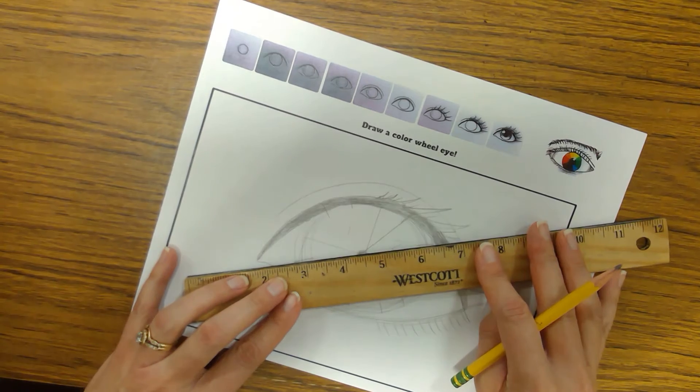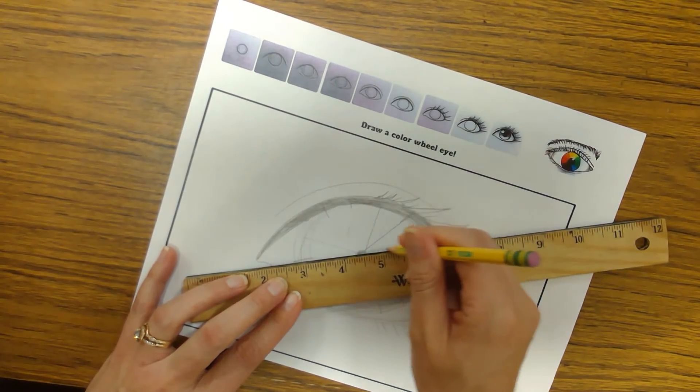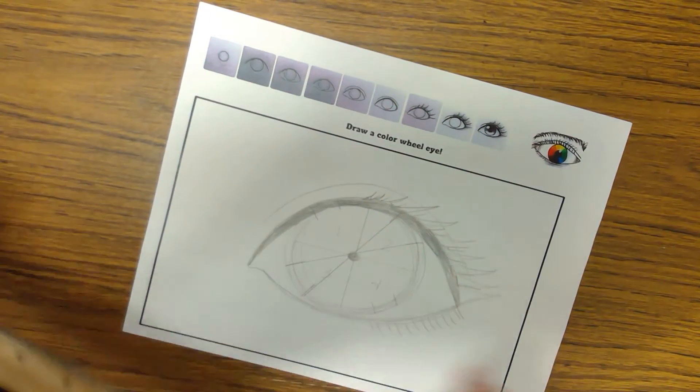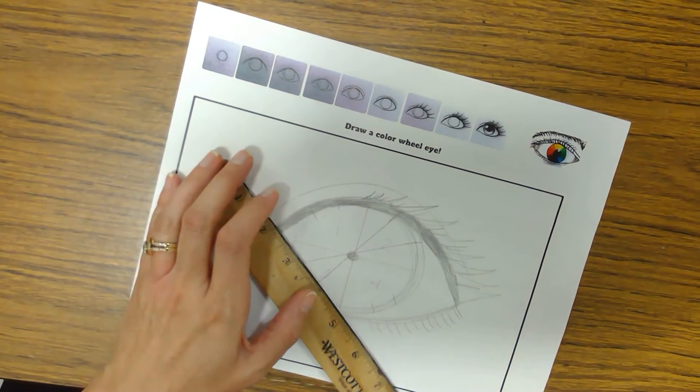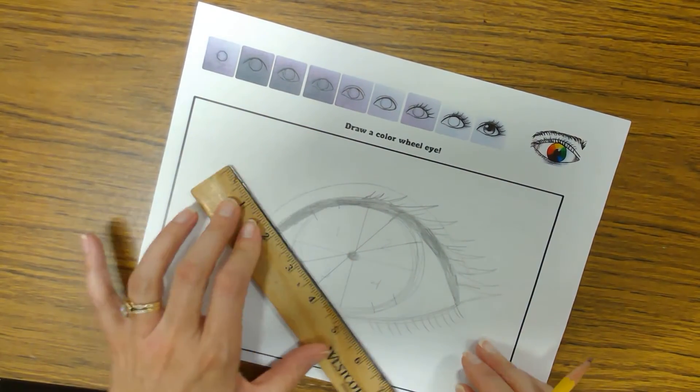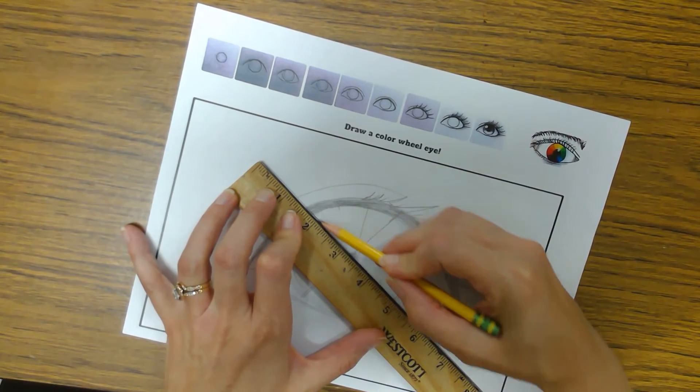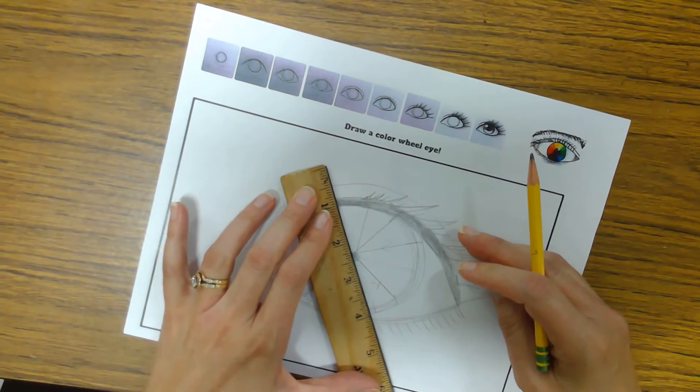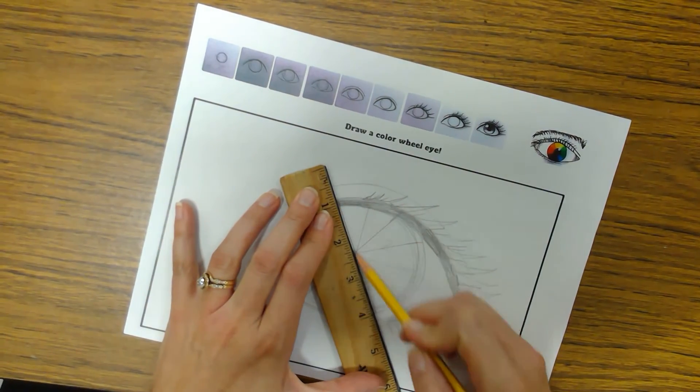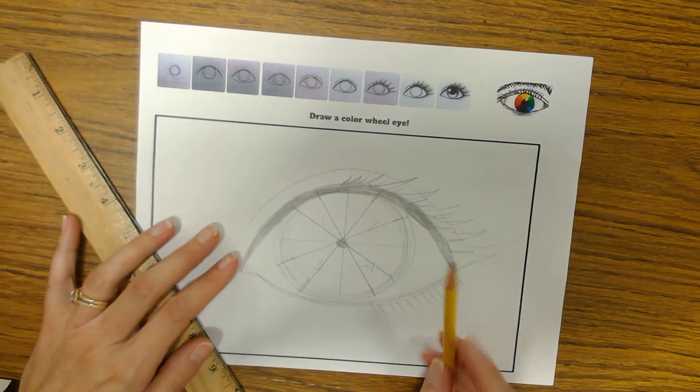Then I'm going to connect these two, make sure they go through the center, like that. Now over here, same thing. I want to make sure that these go through the center and intersect.